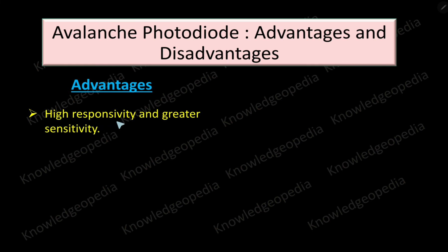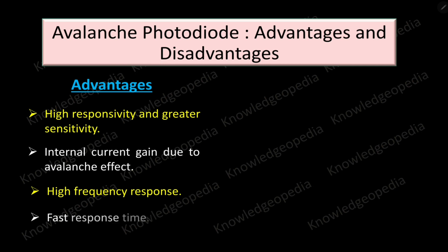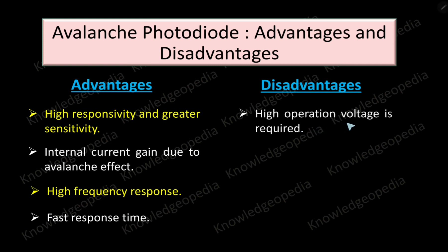Coming to the advantages of the avalanche photodiode: it has high responsivity and greater sensitivity; internal current gain due to the avalanche effect occurs; the frequency response is very high; and the response time is faster compared to other photodiodes. Coming to the disadvantages: a high operating voltage is required because a high reverse bias is needed; the output is non-linear in nature; and the noise level is high.